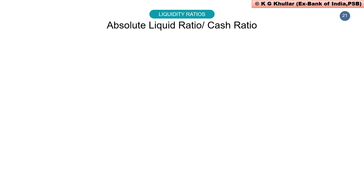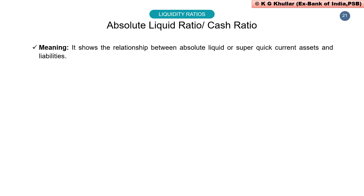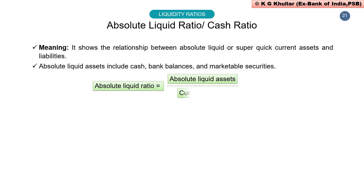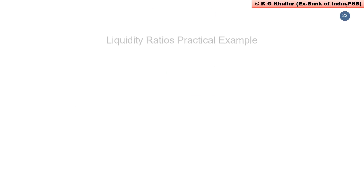The third liquidity ratio is absolute liquid ratio, also known as cash ratio. This ratio shows the relationship between absolute liquid assets and current liabilities. Absolute liquid assets include cash, bank balances, and marketable securities. It is calculated by dividing absolute liquid assets by current liabilities. Ideally this ratio is 0.5:1 (i.e., 1:2), and if the ratio is less than this standard, it means the concern is not liquid. With this we finish liquidity ratios.